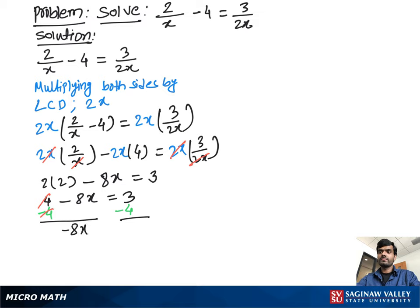4 and 4 cancel out, we get negative 8x equal to negative 1. Then we divide both sides by negative 8. The negatives cancel out and we get x is equal to 1 over 8.